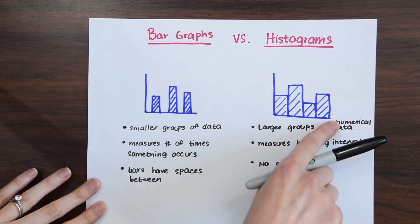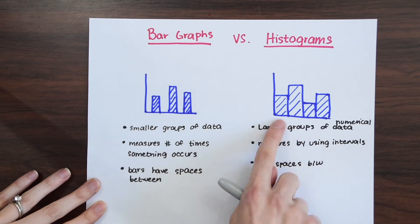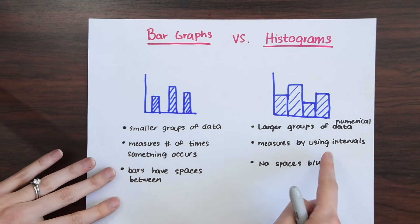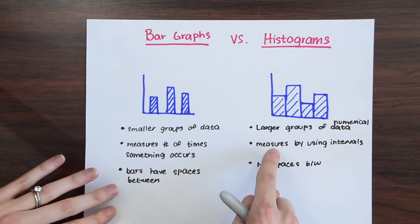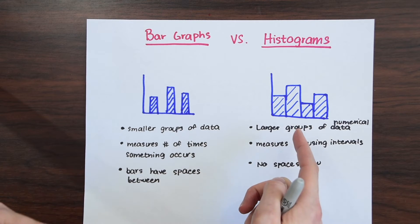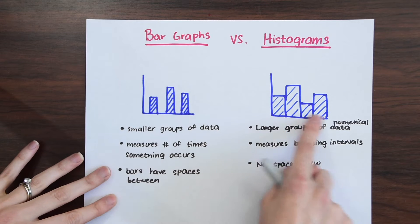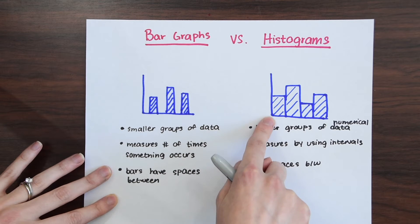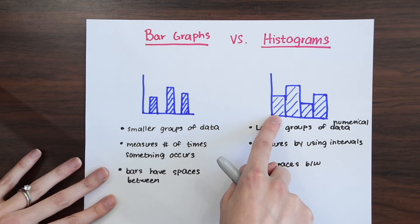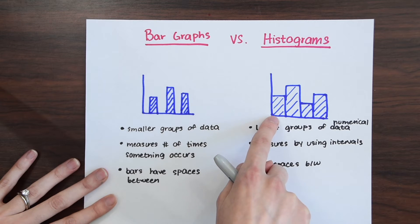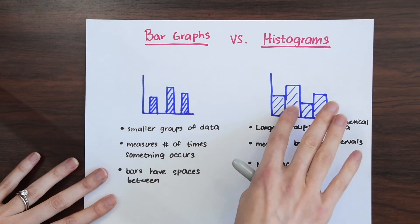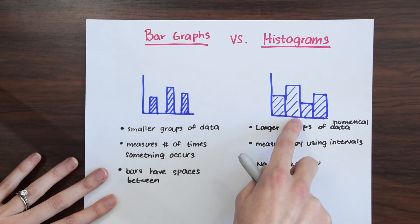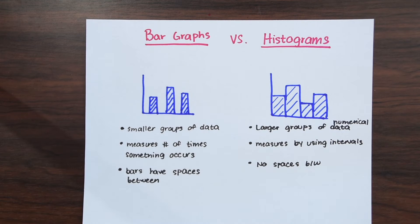When we look at histograms on the right, they do not have spaces between them. Histograms are better for larger groups of data and everything is measured in intervals. For example, if these are test scores, one interval will include a tally of everyone who scored between 60 and 70, and the next would be everyone who scored 71 to 80, and so on.